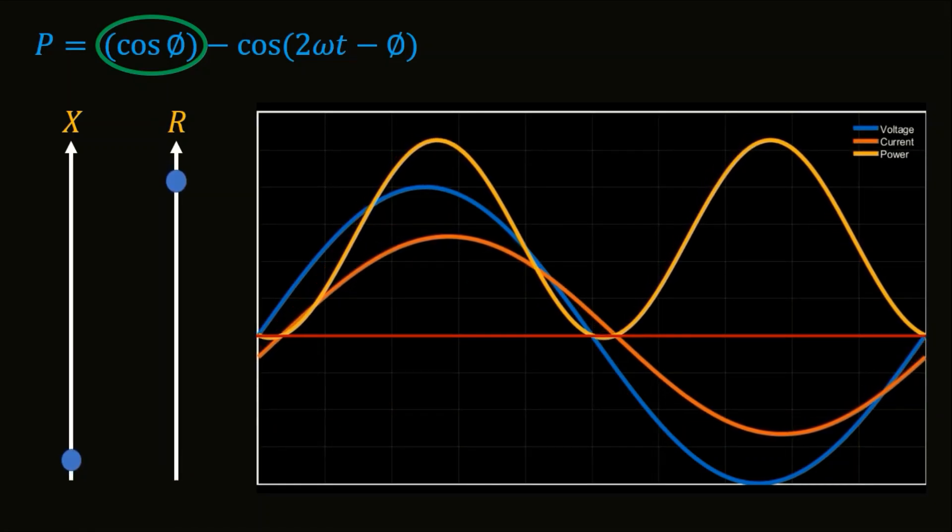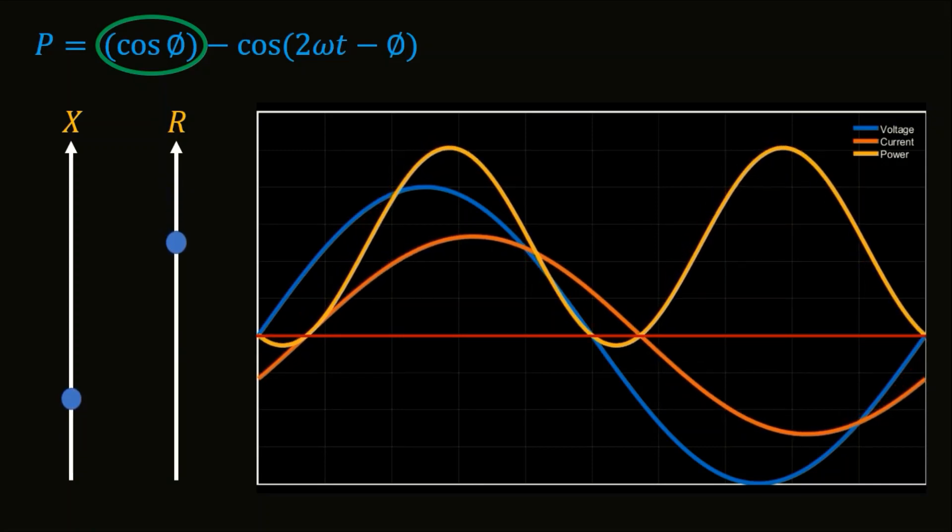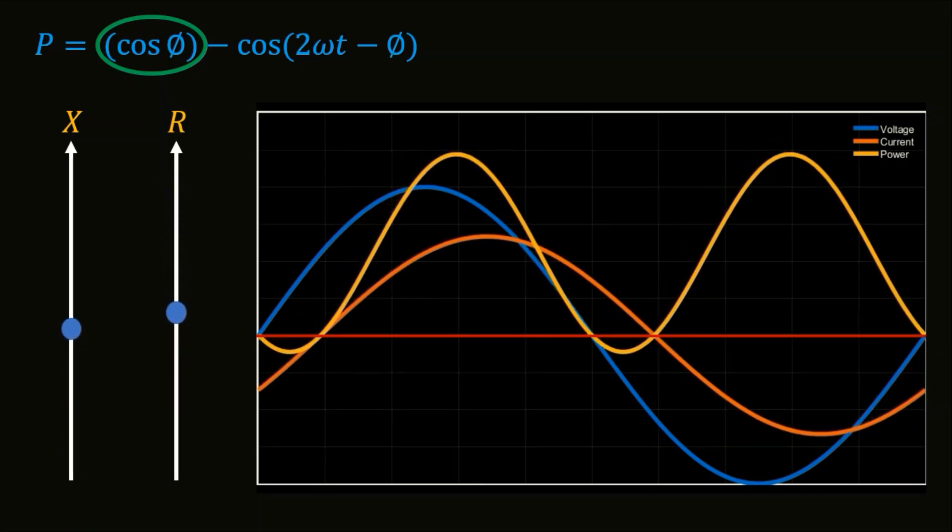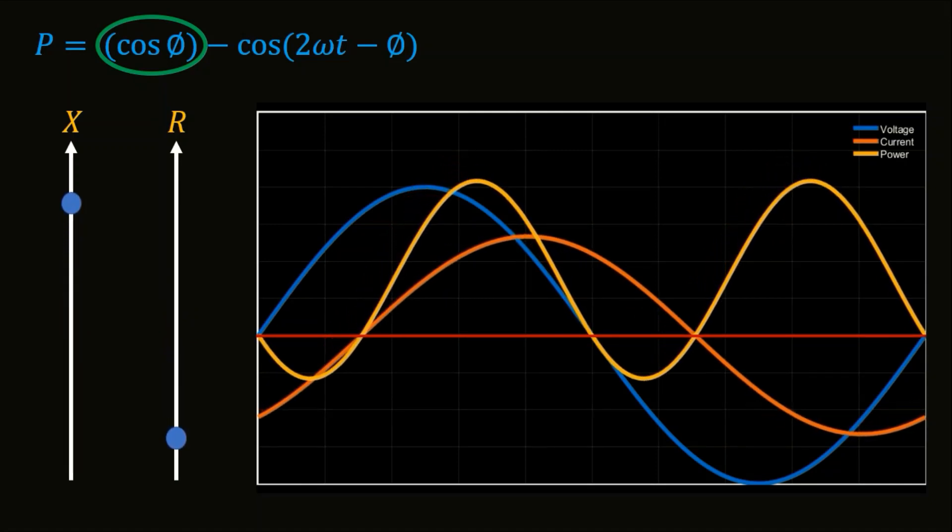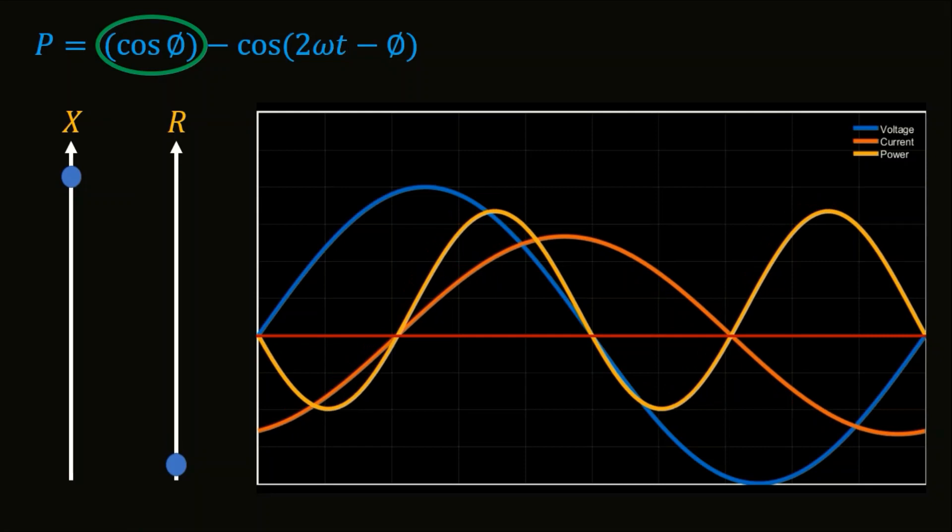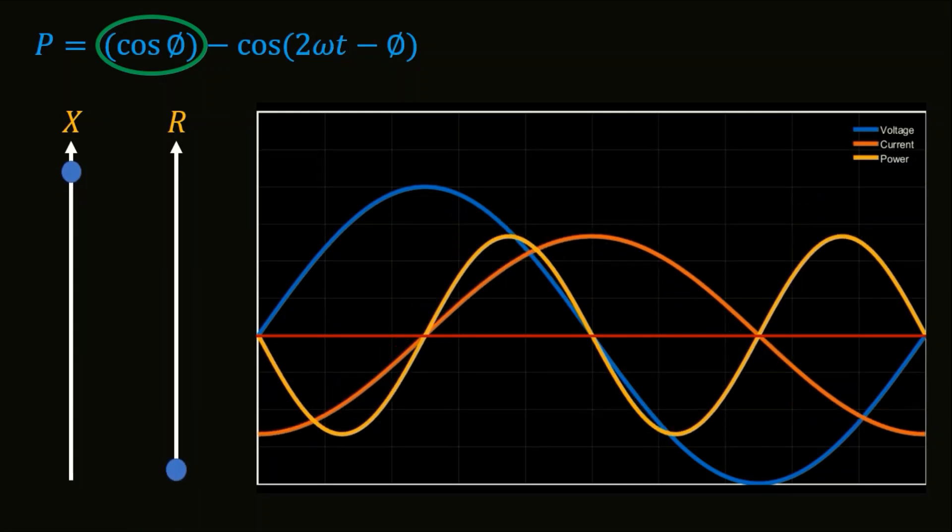Shifting of p curve in x direction is due to the φ present in the second cos 2ωt minus φ term. This is shifting this curve in x direction and the cos φ the first term is shifting this curve the power curve in vertical direction.